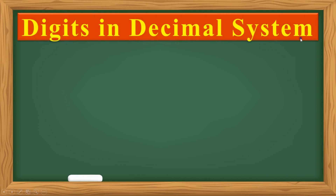Digits in the decimal system. There are 10 digits in the decimal system. They are as follows.